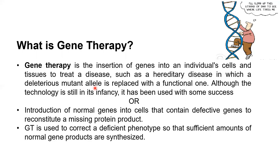If you have a disease in one of your genes, you can replace it with a working copy. This technology is still in its infancy, meaning it is mostly restricted to trials at the moment, but it holds a lot of promise. In the next few decades we will see it become a common medical procedure. The introduction of normal genes into cells containing defective genes allows the missing protein to be compensated.